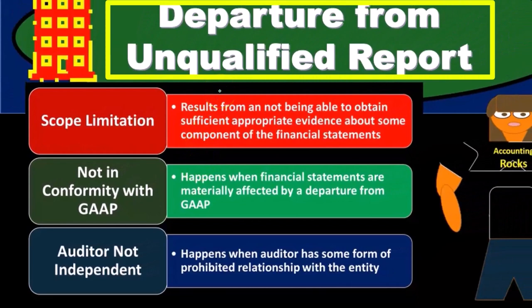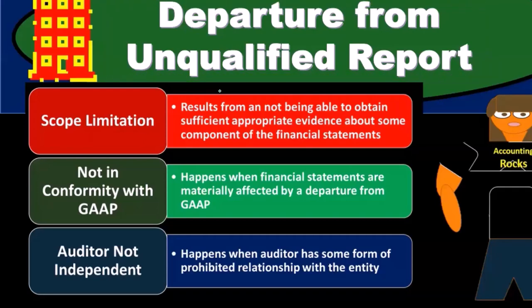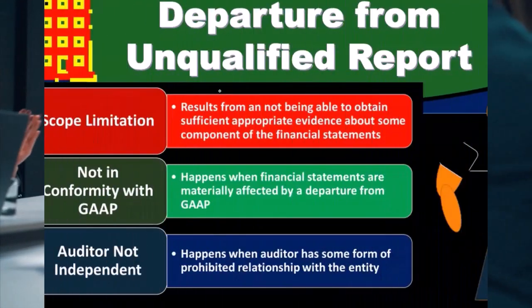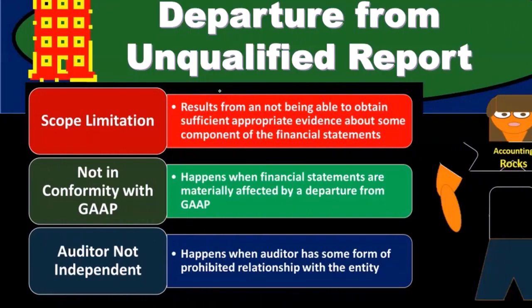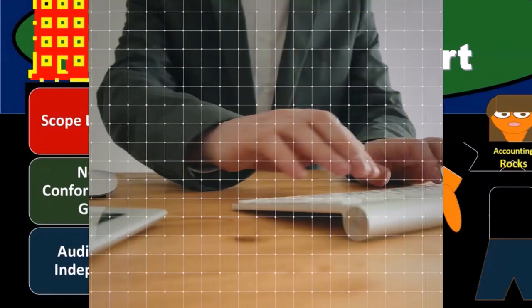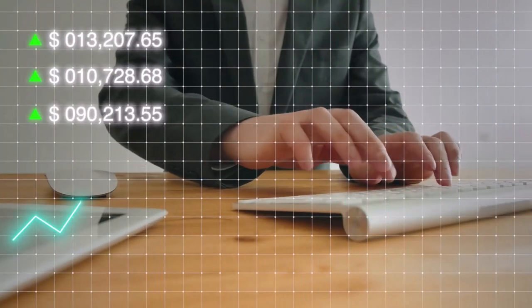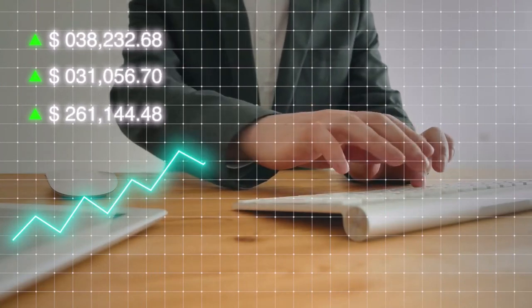If there's a departure, that basically means there's some type of problem. We're departing from the unqualified report and going to issue something other than an unqualified report. There's something fairly significant requiring us to depart from what we would expect to be the normal standard unqualified report. As we consider the types of qualifications, we still want to think about that standard report.